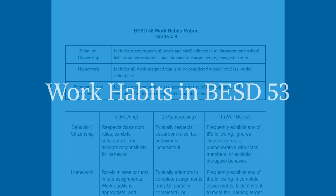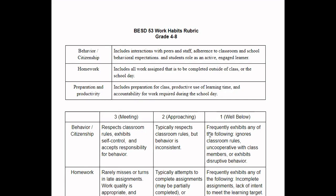You're now viewing a copy of the Bourbonnet District 53 Work Habits Rubric for grades 4 through 8. If you teach in grades K through 3, you should refer to the K3 document. But you can see here at the top you have your three criteria: behavior and citizenship, homework, and preparation and productivity, and a brief description of those three categories.